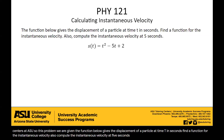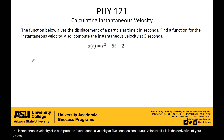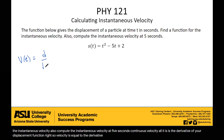So instantaneous velocity — all it is — is the derivative of your displacement function. Velocity is equal to the derivative with respect to time of the displacement s of t.